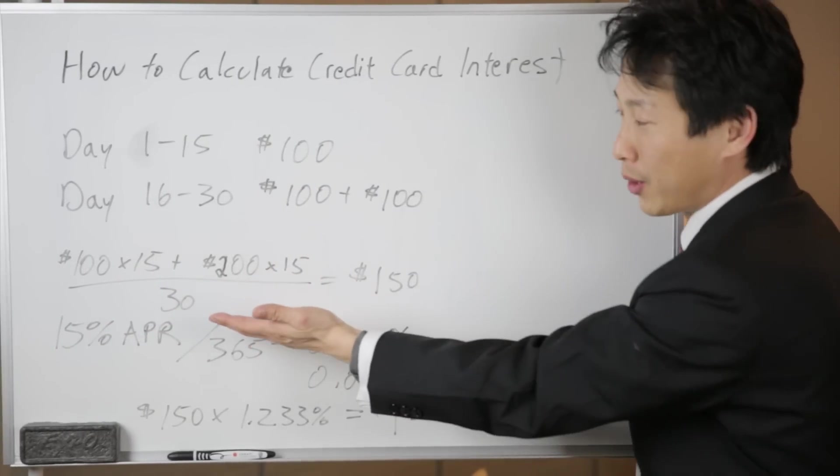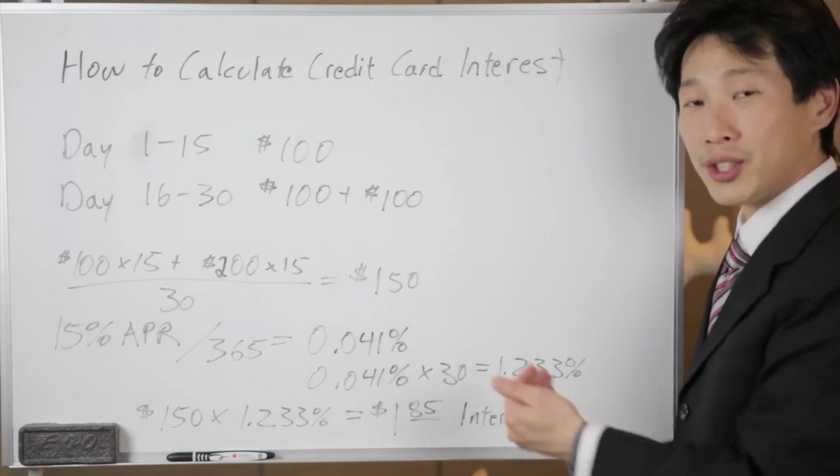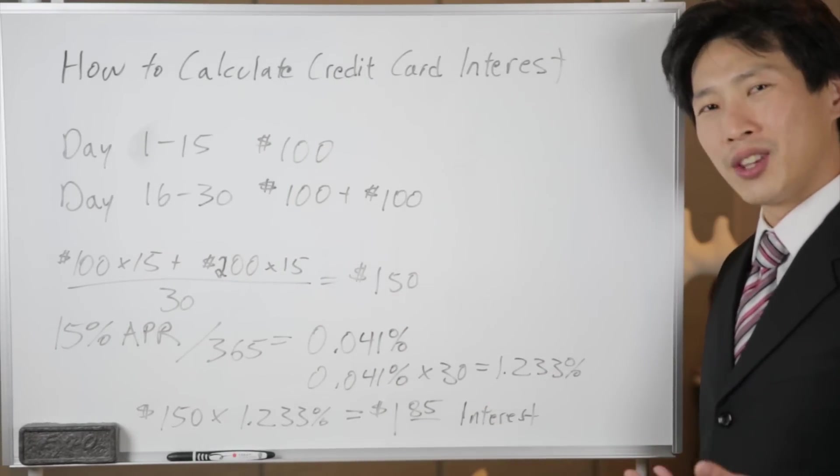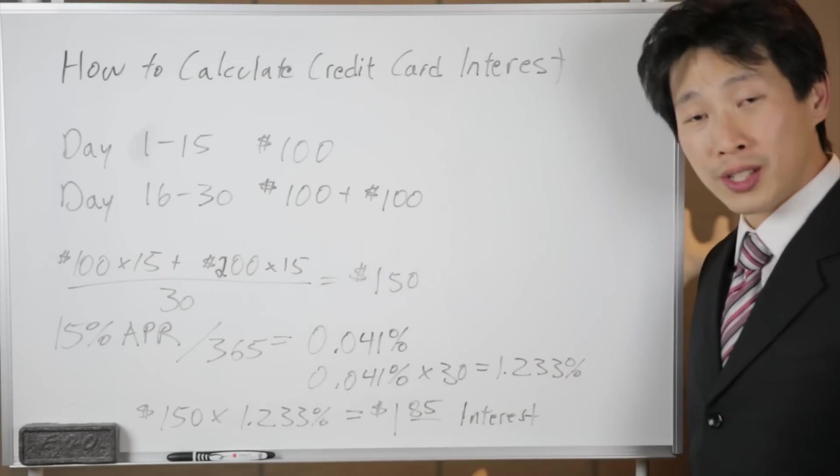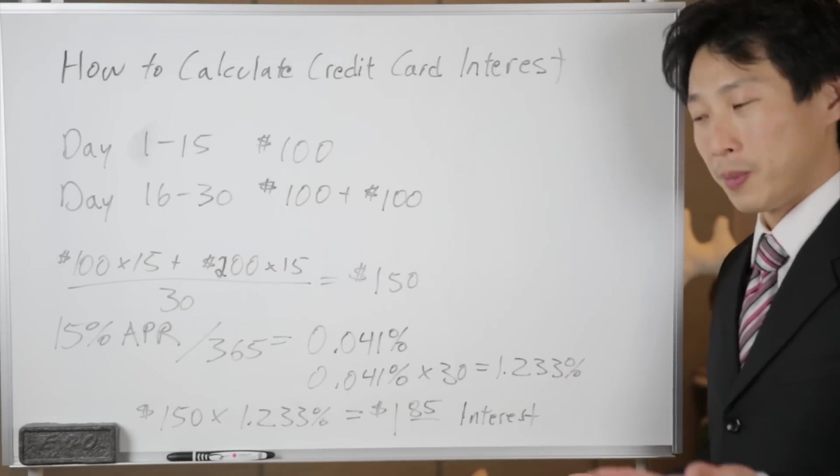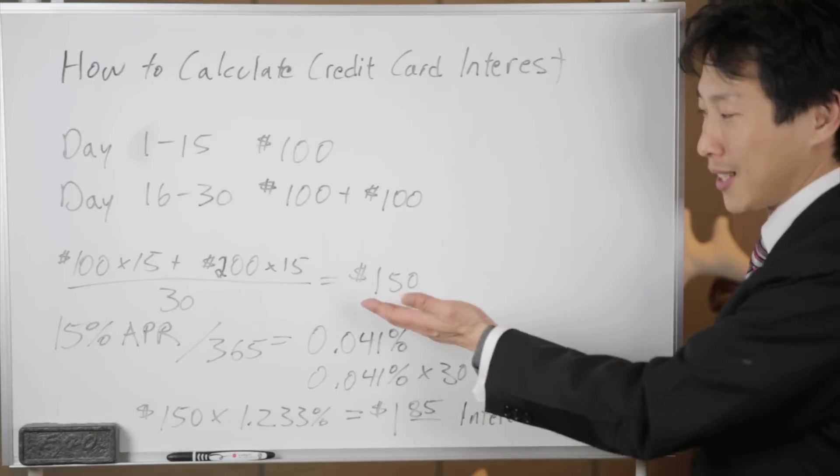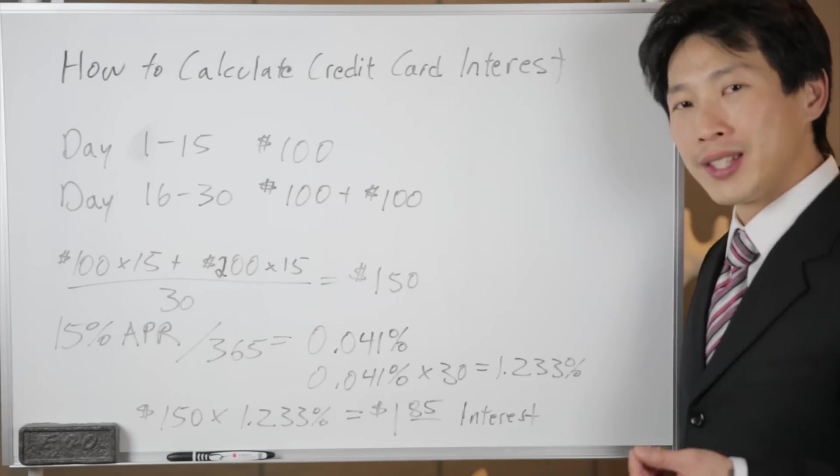And then you divide it by 30 to get the average daily balance of $150. You would know on the ballpark if the first half you owe $100, the second half you owe $200, the average of that would be somewhere in between. In this case it's exactly $150.